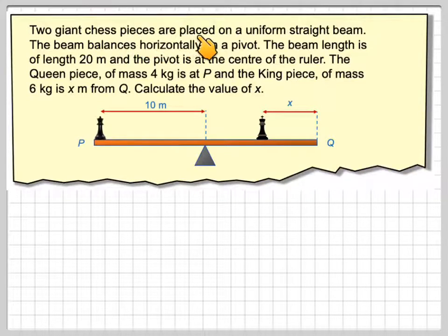Two giant chess pieces are placed on a uniform straight beam. The beam balances horizontally on a pivot. The beam length is 20 metres, this is the total length of 20 metres, and the pivot is at the centre of the ruler. The queen piece of mass 4 kilograms is at P, and the king piece of mass 6 kilograms is at X metres from Q.